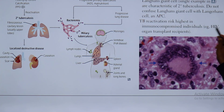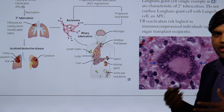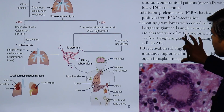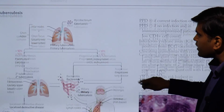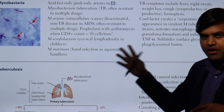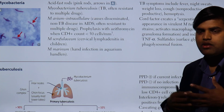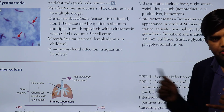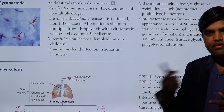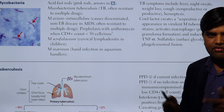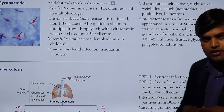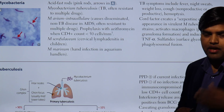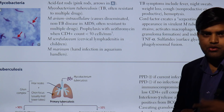Reactivation TB risk is highest in immunocompromised individuals, such as those with HIV or organ transplants. Reactivation mostly occurs in the apical region of the lung. In summary, mycobacterium tuberculosis are acid-fast bacilli appearing pink on staining. Treatment always involves a combination drug regimen. For diagnosis, we perform AFB staining, auramine-rhodamine staining, culture on Löwenstein-Jensen media, and gene amplification tests such as GeneXpert or PCR to confirm tuberculosis. Further discussion will follow in subsequent lectures.